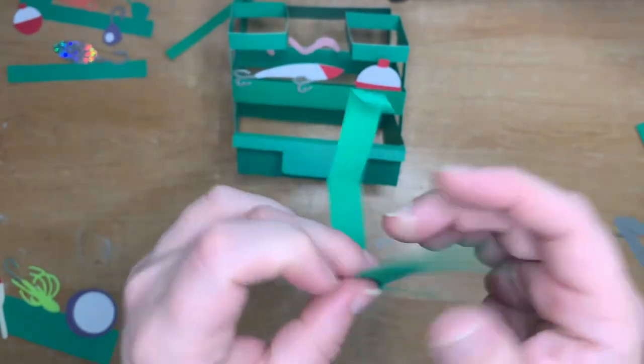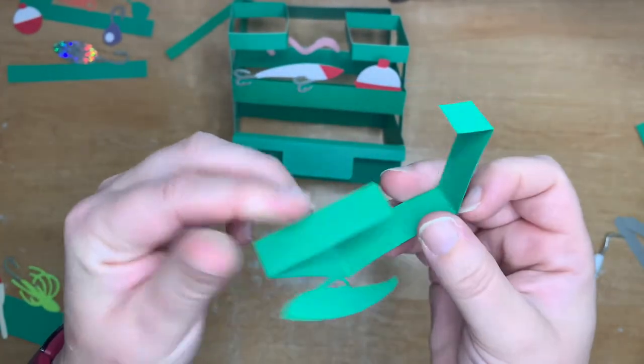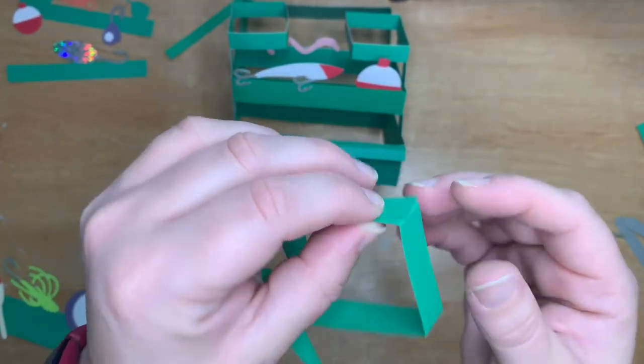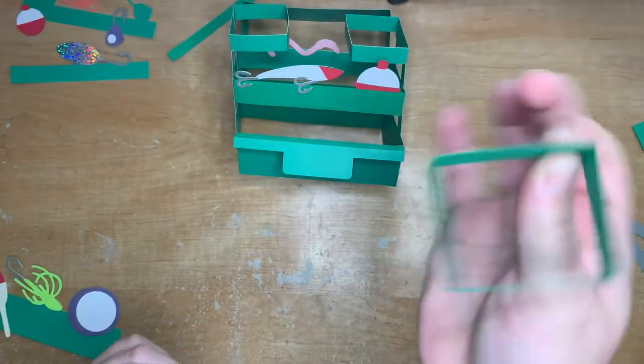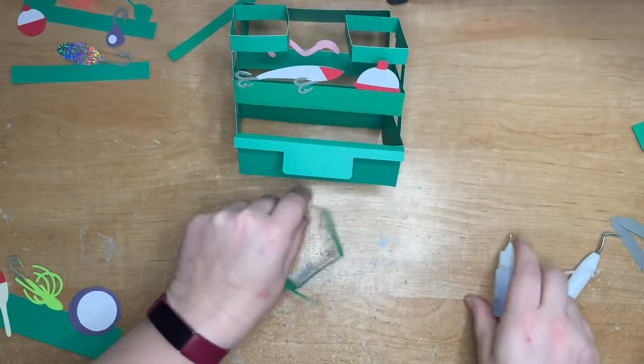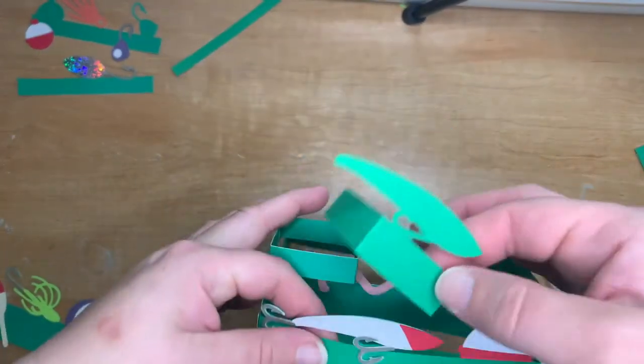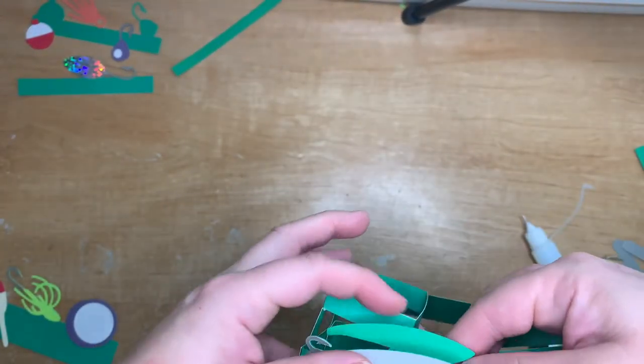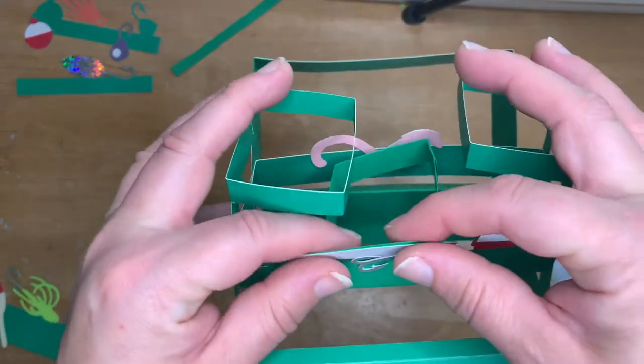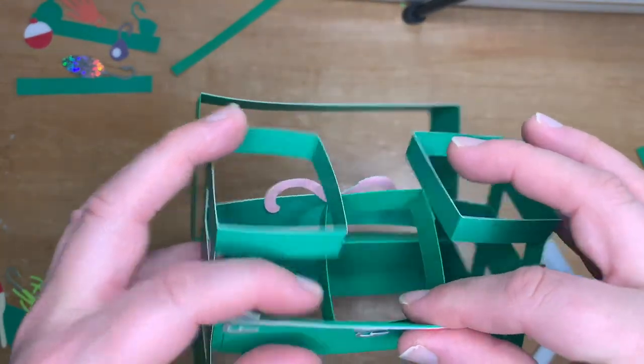This green strip with the fish shape on it, the fish goes behind the piece that you've already put on there. This creates a square which is the center of the tackle box and the middle section of that front. Once you glue that together you can then put it in place in the middle of the box there, directly behind the fish and in front of that one.